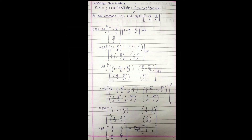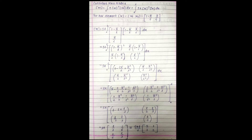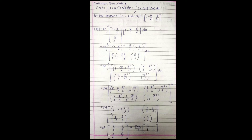Now I will calculate the consistent mass matrix. The basic formula for mass is density times volume. So I multiply density by a small volume and integrate over the total volume. The formula is: M = ∫ ρ · N^T · N dV, integrated from 0 to V. I replace dV with A·dx and integrate dx from 0 to L, so: M = ∫₀ᴸ ρA · N^T · N dx.